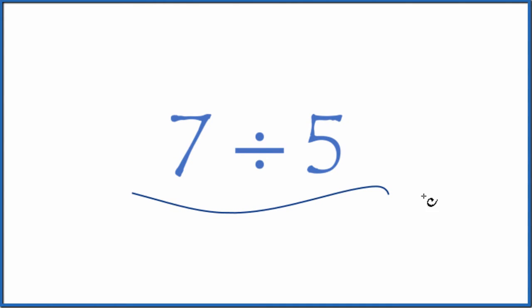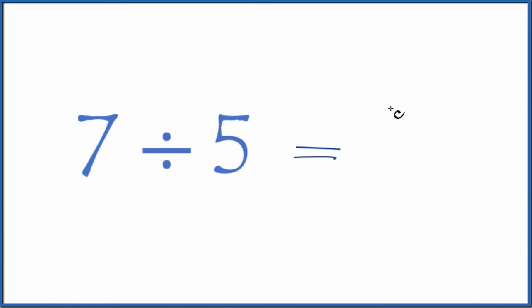Let's divide 7 by 5. First off, let's consider this a fraction. 7 divided by 5, that's the same as 7 fifths. So we have a fraction.